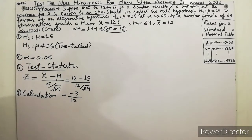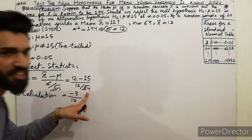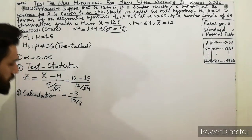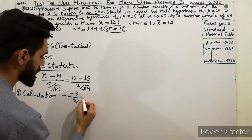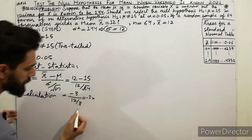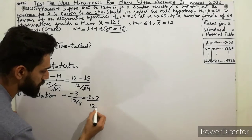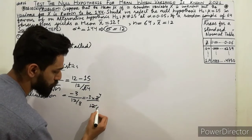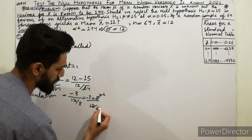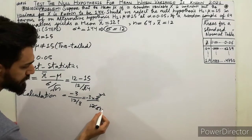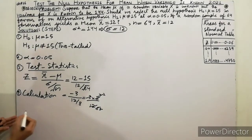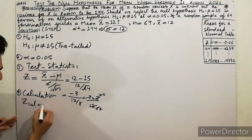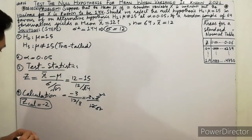Continuing the calculation: we have minus 3 multiplied by 8 in the numerator divided by 12. Simplifying — 8 divided by 12 reduces, and minus 3 times 8 divided by 12 equals minus 2. So the calculated value of z is minus 2.